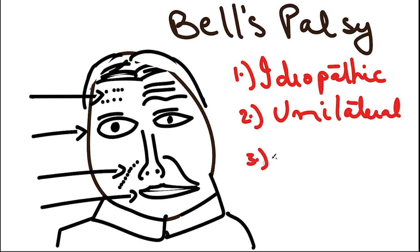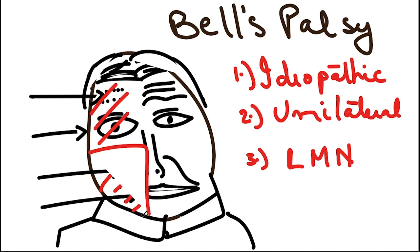And it is a lower motor neuron type of facial weakness. When we say lower motor neuron, it means that the upper half as well as the lower half of the face is involved. If somebody had a facial weakness just related to a stroke, it is usually the lower half of the face that's involved. But with a lower motor neuron type of facial paralysis, you get both the upper and lower motor neuron type of weakness.